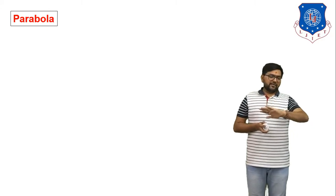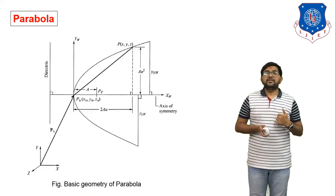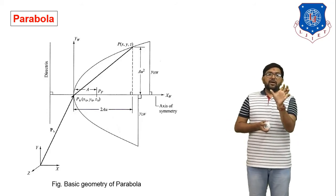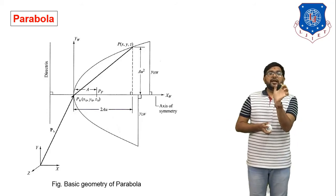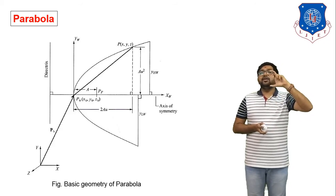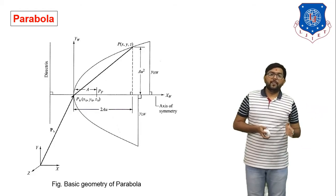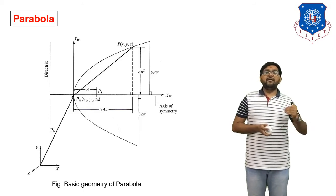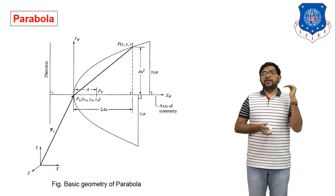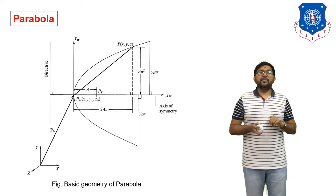Now we derive the equation for the parametric representation of a parabola. You already know the equation of a parabola is y² = 4ax. The horizontal distance is 2au and the vertical distance is au², which is the parametric equation already available for the parabola. A parabola is an axisymmetric curve, meaning the shape of the curve remains the same on both sides of the center line.